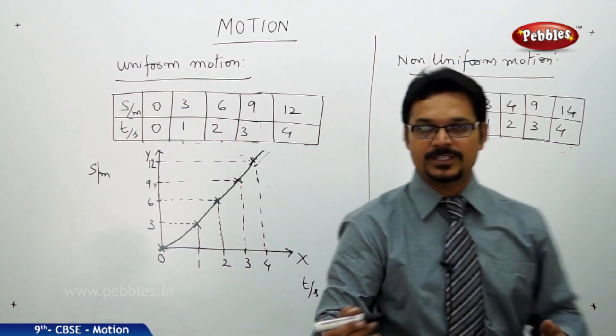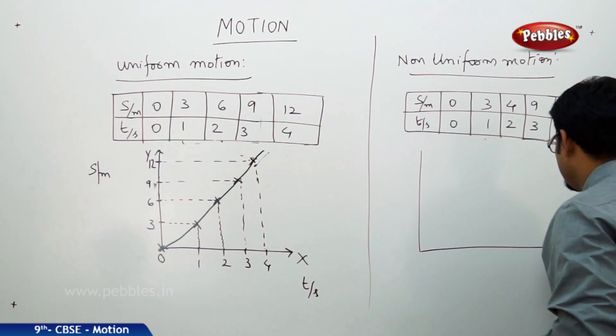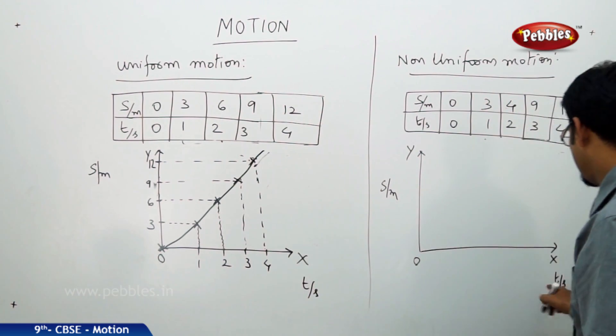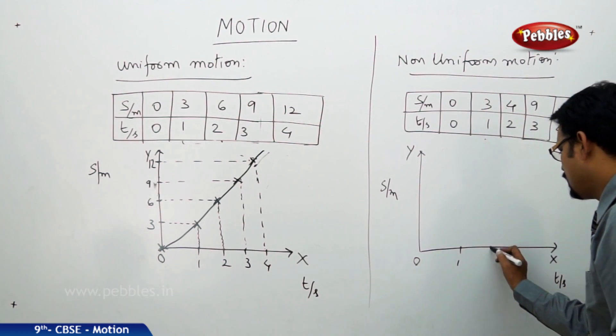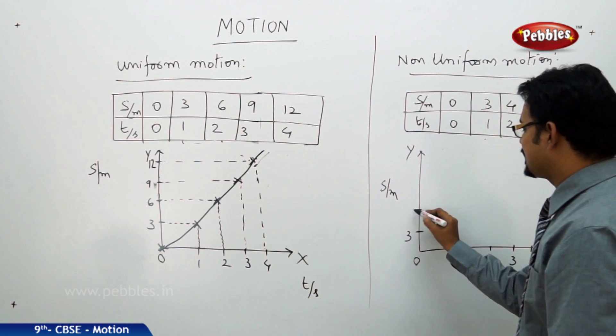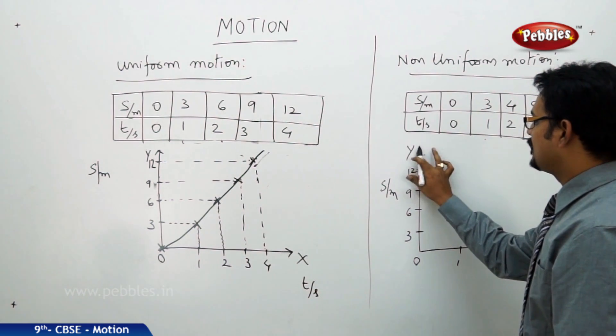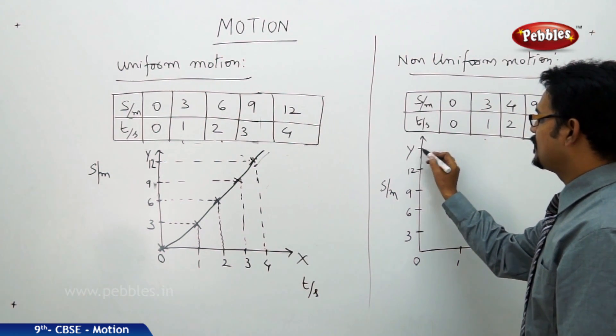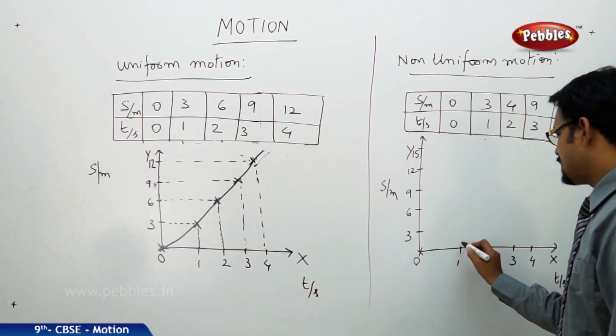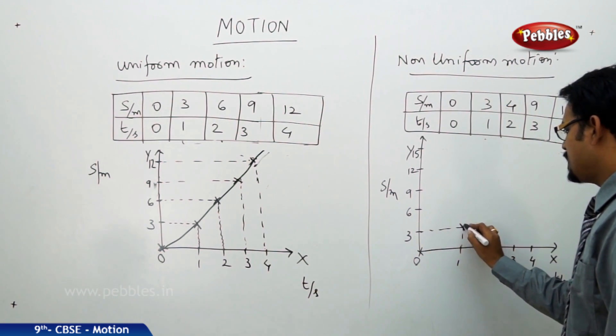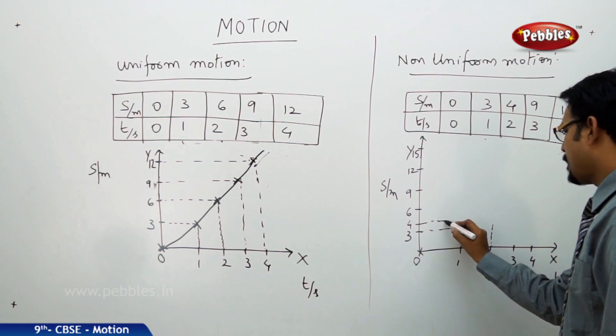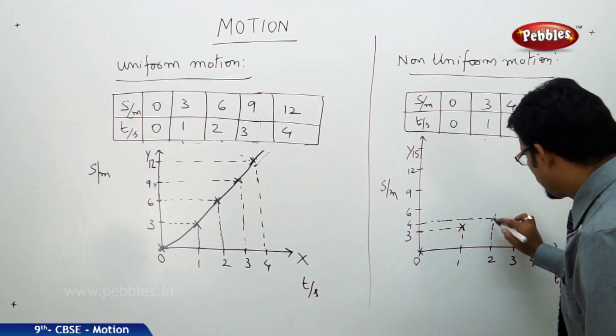Now, non-uniform motion. Let me draw the same graph with the same rules. So, this means x, time taken in seconds, 0, y axis. So, this is the distance in meters, time in seconds. Again, locate the times and distances, 3, 4, no, 3, 6, 9, 12. Let me extend this, 12, 15. Okay. Now, see what happens. 0, 0, located. 1 is 3 meters. 2 is 4 meters. So, let us say this is 4.